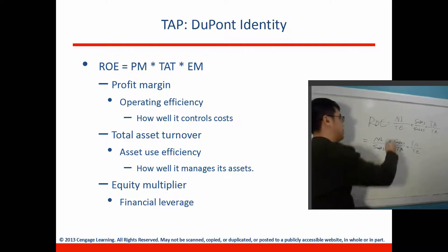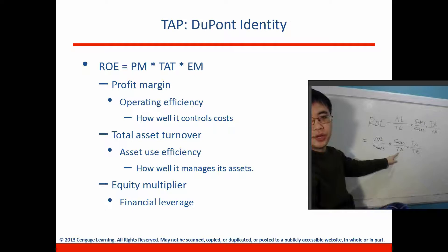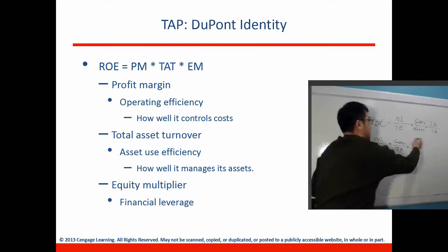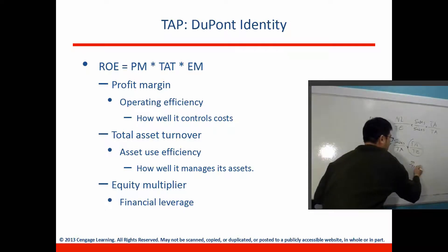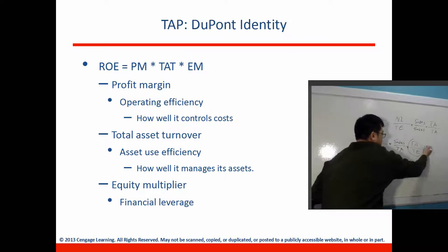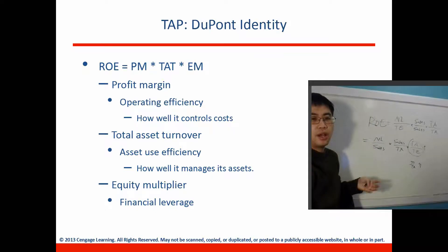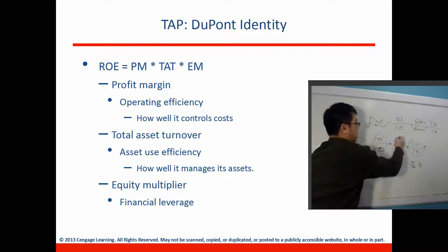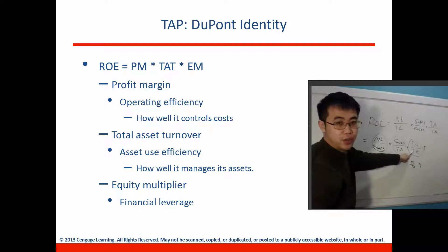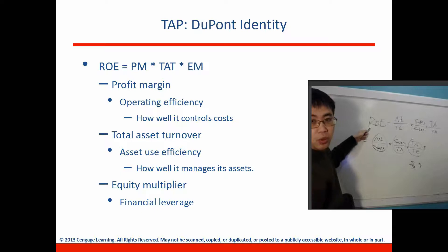The profit margin gives an idea of the firm's profitability — you hope this is positive. The total assets turnover ratio gives a sense of efficiency: how effectively managers utilize the firm's resources to generate wealth. The equity multiplier is essentially the debt ratio — financial leverage. If the firm has more debt obligations, the equity multiplier increases. So if you have a positive profit margin and positive asset turnover, when leverage increases with more debt, your return on equity will increase.